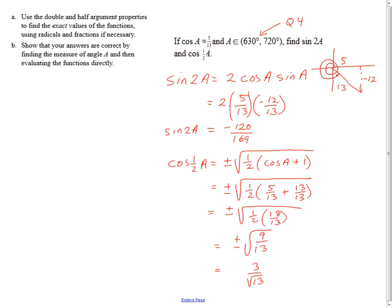which is 9 thirteenths, plus or minus the square root of 9 thirteenths, which is equal to 3 over the square root of 13. I think I'll leave it on like that. Now, I've got to decide whether it's plus or minus. It's not both. This is some specific angle. a was in quadrant 4. It was between 6.30 and 7.20. So 1 half a, if a is between 6.30 and 7.20, then where does 1 half a have to be? Well, then 1 half a has to be between 3.15 and 3.60.